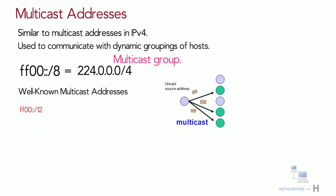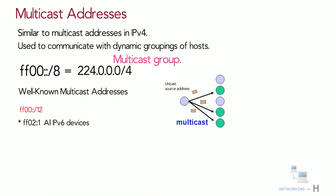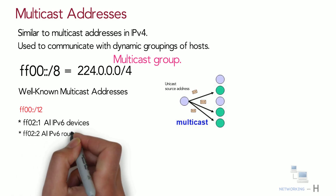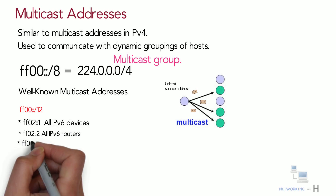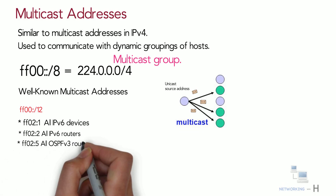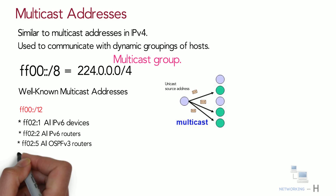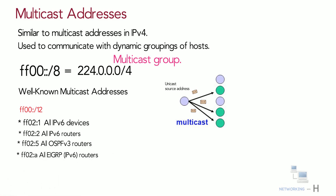Some well-known multicast addresses have the prefix FF00::/12. Examples of IPv6 well-known multicast addresses include: FF02::1 — all IPv6 devices; FF02::2 — all IPv6 routers; FF02::5 — all OSPFv3 routers; and FF02::A — all EIGRP IPv6 routers.